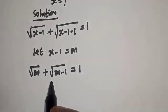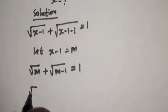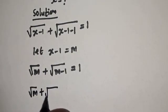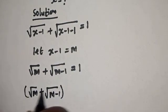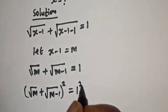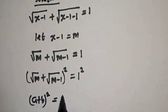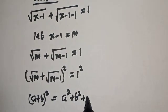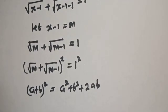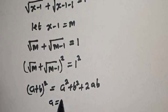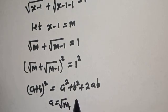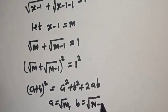Let's square both sides. Square root of m plus square root of m minus 1, squared, is equal to 1 squared. Remember this rule: (a + b)² = a² + b² + 2ab, where a equals square root of m and b equals square root of m minus 1.